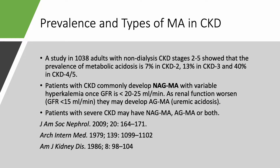What about the prevalence and what kind of metabolic acidosis should we expect in patients with chronic kidney disease? A big study in 1,038 patients with stages 2 through 5 chronic kidney disease, not on dialysis, showed that the prevalence of metabolic acidosis is 7% only in CKD stage 2, but went up to 13% in stage 3 and was up to 40% in stages 4 and 5.